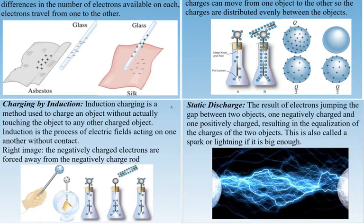Another method is discharge. In this case, two objects are not in contact, but one has a large excess of charge. It will break through an insulator — through the air — and discharge onto the other object. An example would be lightning.